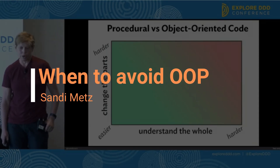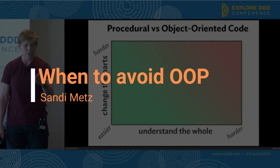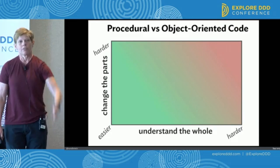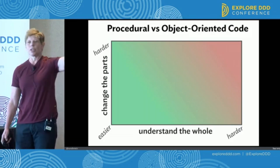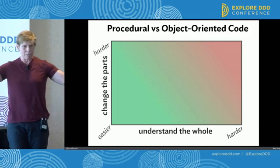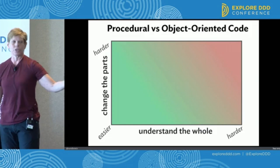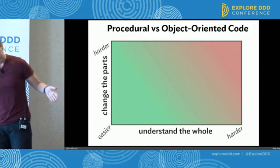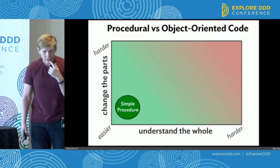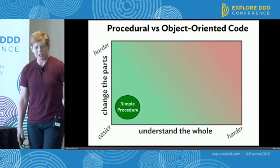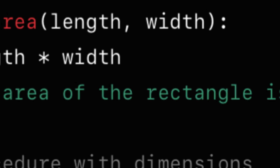It's another chart plot space. Change is on the vertical axis — if code is easy to change it's at the bottom, if it's hard to change it's at the top. Understandability is on the horizontal axis: things that are easy to understand are on the left, and as you move to the right it's harder to understand. In this space, a simple procedure is the easiest thing — it's easy to change and easy to understand.